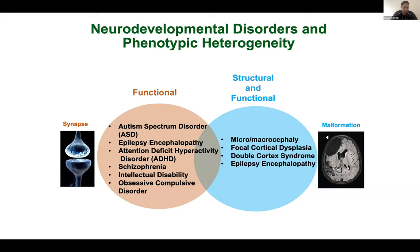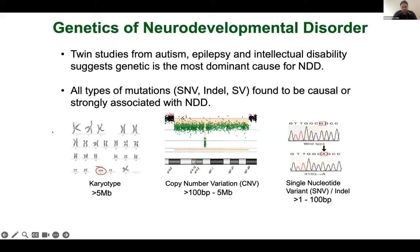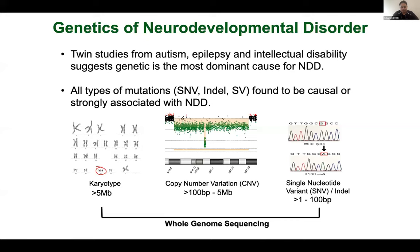So is intellectual disability and obsessive compulsive disorders. Throughout my talk I'll have studies explaining either autism, epilepsy, or broader neurodevelopmental disorders. Twin studies show these diseases are mostly genetic, encompassing a whole host of variants from karyotype to copy number variation to single base pair substitutions. Recent whole genome sequencing can capture all of these variants and identify the mutated or causal variants.